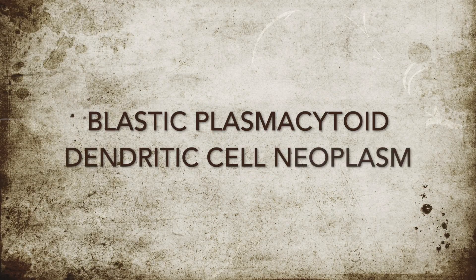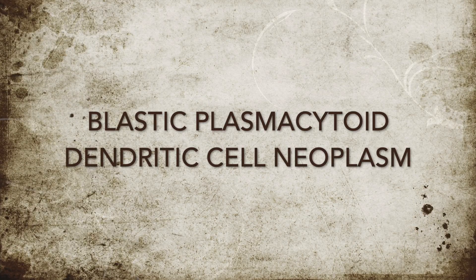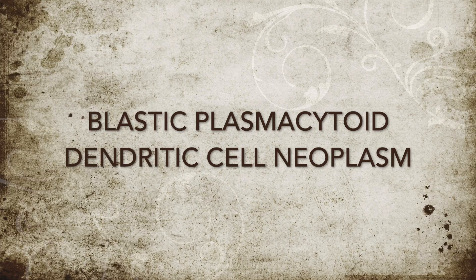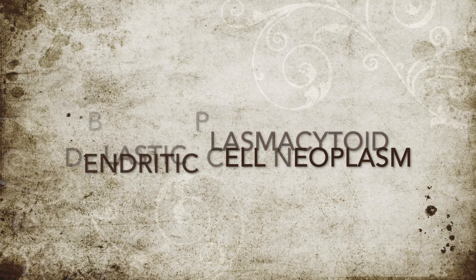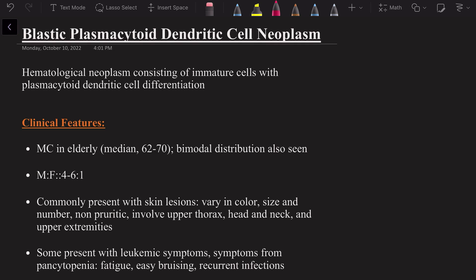Hi everyone, this is Anurag again. Today we're just going to be quickly talking about a very interesting topic called Blastic Plasmacytoid Dendritic Cell Neoplasm, or also called BPDCN. It's a hematological neoplasm which consists of immature cells with a plasmacytoid dendritic cell differentiation.